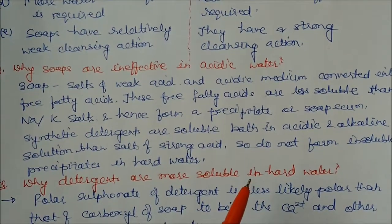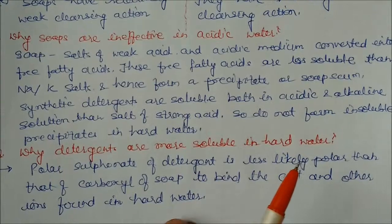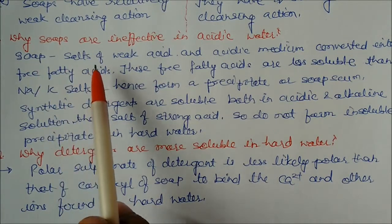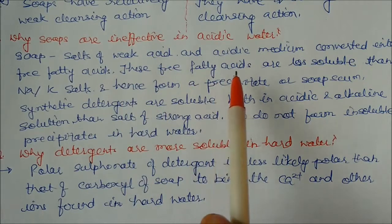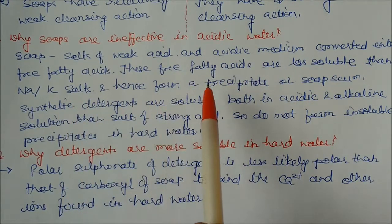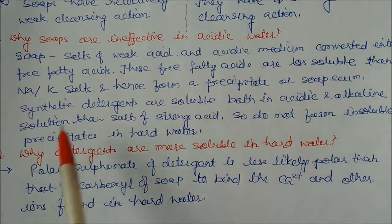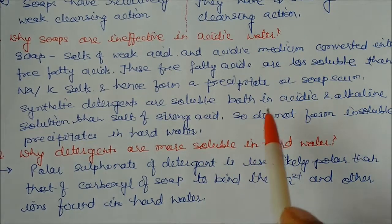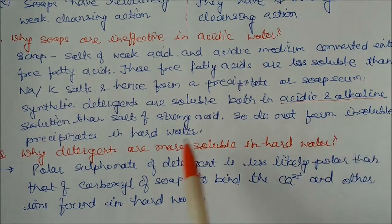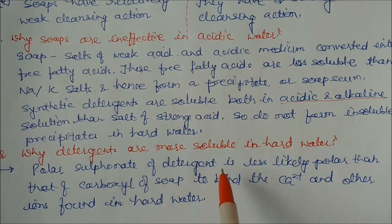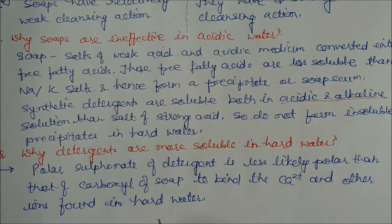Why are soaps ineffective in acidic water? Since soaps are salts of weak acids, an acidic medium converts them into free fatty acids. These free fatty acids are less soluble than their sodium or potassium salts, and hence form a precipitate or soap scum. Synthetic detergents, being salts of strong acids, are more soluble in both acidic and alkaline solutions and do not form insoluble precipitates in hard water. This is because the polar sulfonate group of detergents is less likely to bind calcium ions and other ions found in hard water compared to the carboxylate group in soaps.